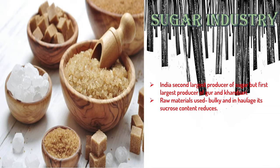The sugar industry is a raw material based industry, meaning sugar industries are established near sugarcane producing areas. The raw materials used are quite heavy and bulky — they take more space, and the cost of transportation of raw materials is more than the cost of the finished product.